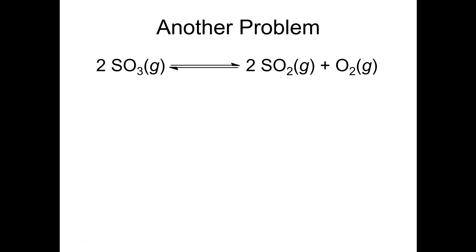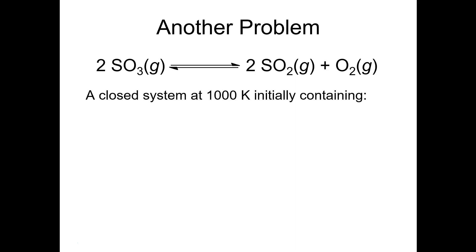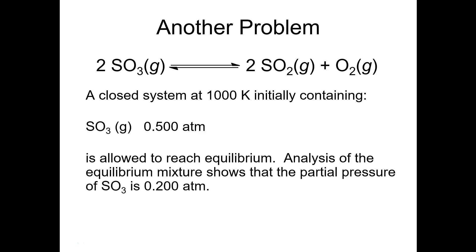Let's try another problem. You can turn the video off, work it out, and then check. This is the decomposition of sulfur trioxide to give sulfur dioxide plus oxygen. We have a closed system at 1000 K, initially charged with 0.5 atm of SO₃ only. At equilibrium, the partial pressure of SO₃ is 0.2 atm. We need to calculate Kp for this reaction.